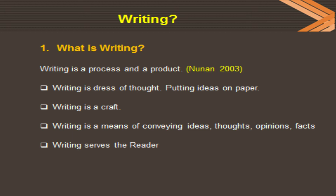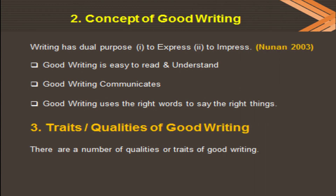Not every writing can be good. Some experts say there are two types of writing: good writing and bad writing. Today we deal with the concept of good writing. Writing has a dual purpose: number one, to express — it gives the writer a chance to express ideas, facts, opinions, thoughts, and comments — and number two, to impress and create a readership for the writing. So writing has two purposes, according to Noonan (2003).